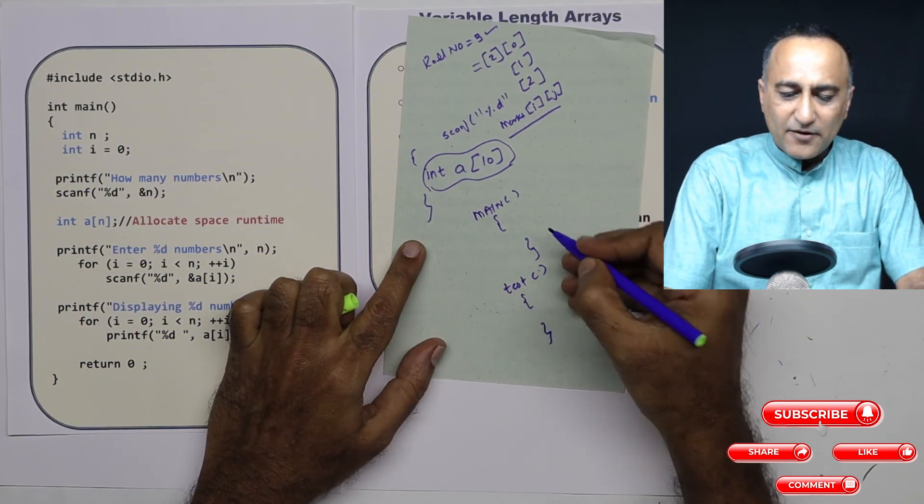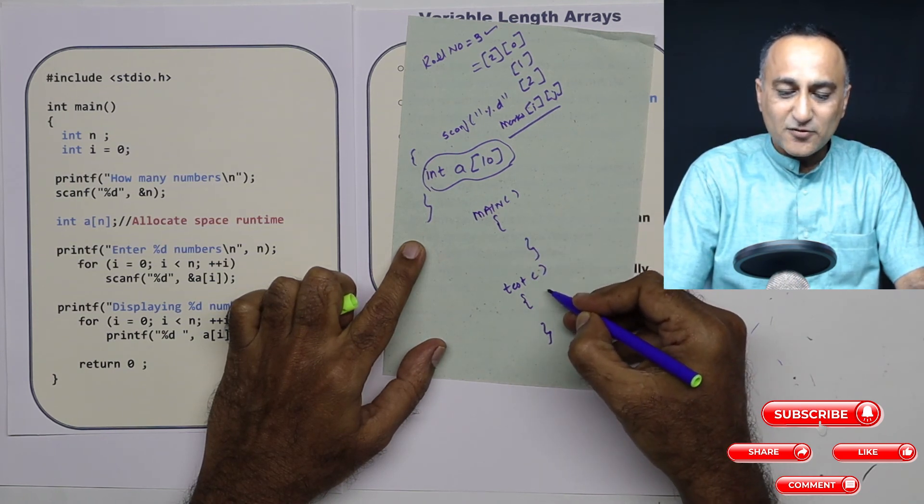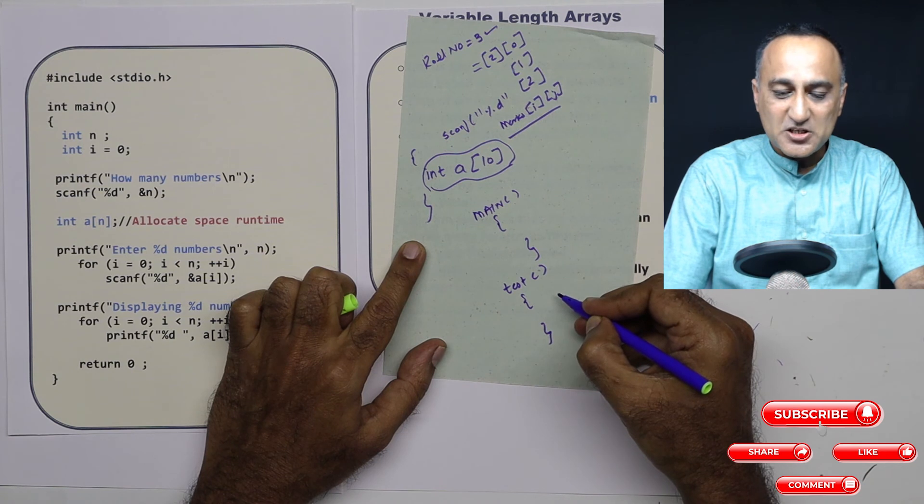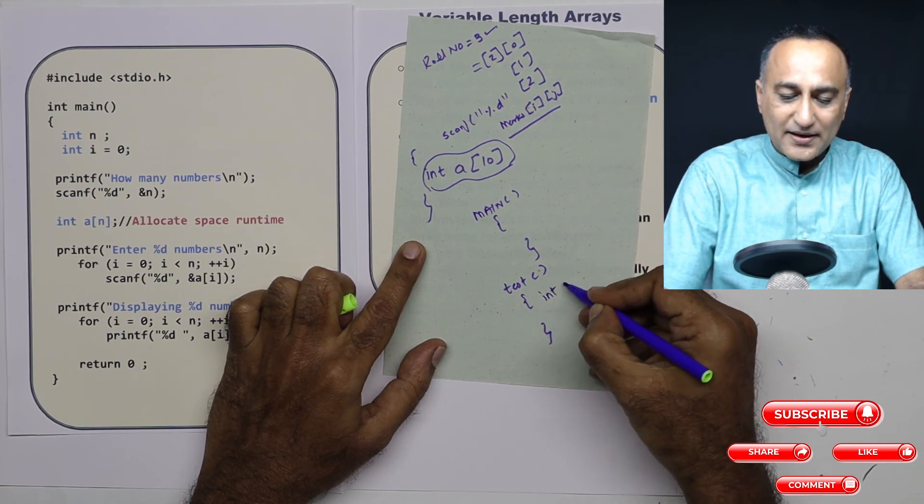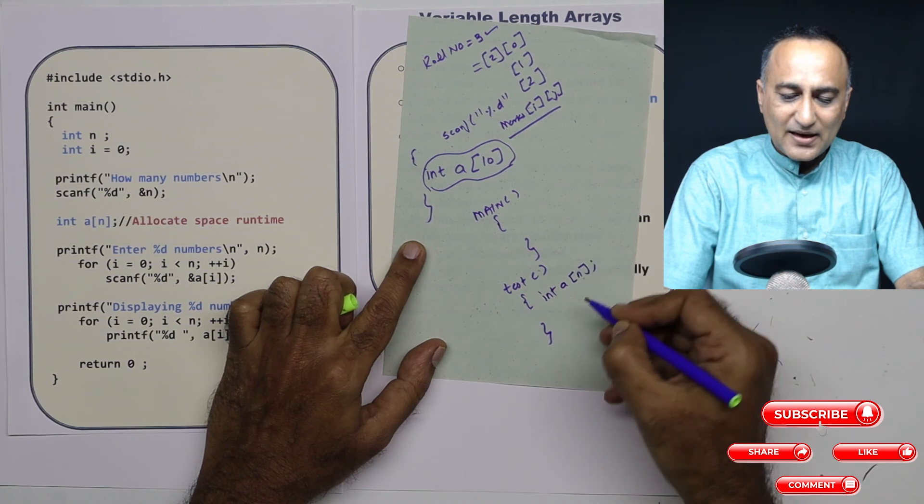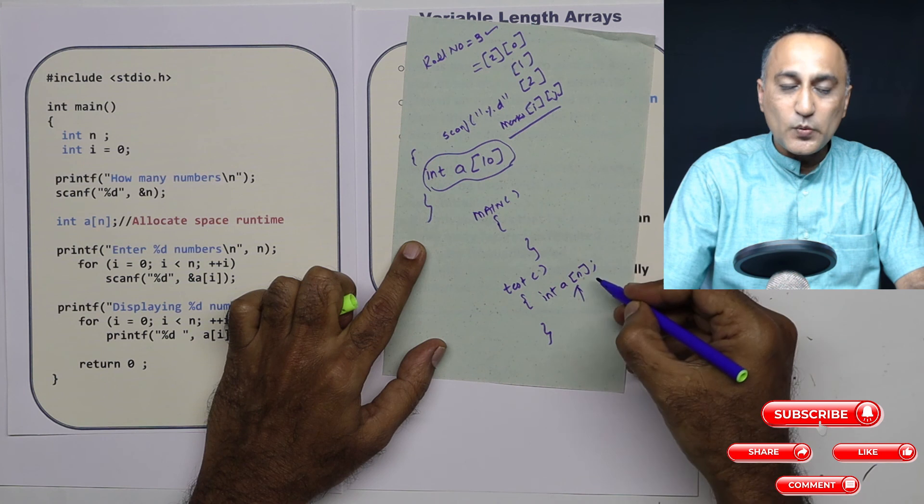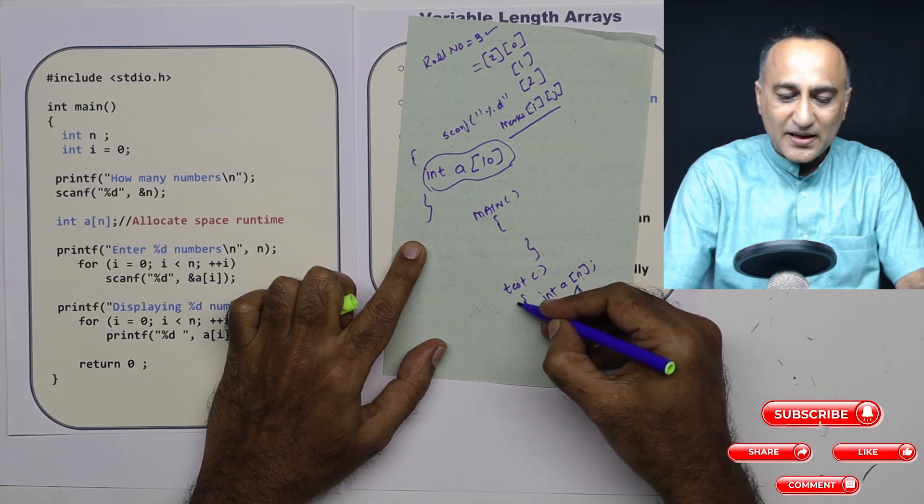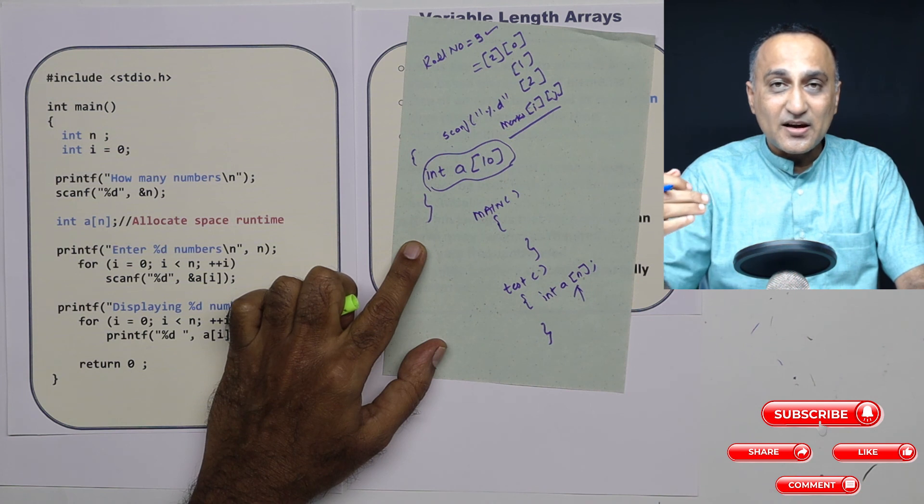And every time you are calling test, the size of the array, let's say, keeps changing. In this case, it makes sense to allocate the size of the array every time dynamically, because anyway, these local variables are created every time when test is called and destroyed when every time test is done executing.